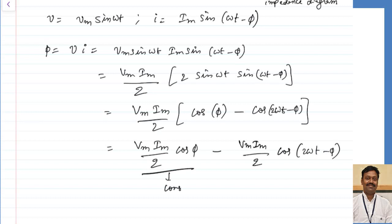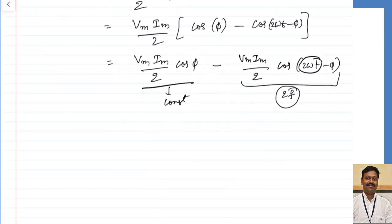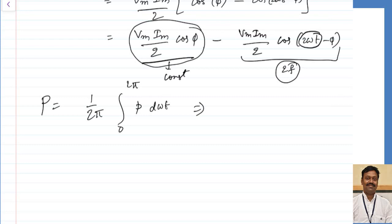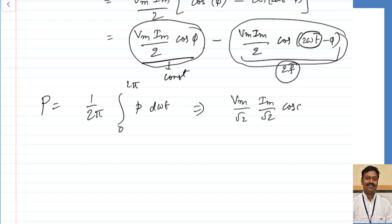The first term is a constant, independent of frequency. The second term oscillates at double the frequency. To calculate average power, we average over one cycle: (1/2π)∫₀²π p·d(ωt). The constant term remains as is, while the double-frequency cosine term averages to zero over 2π. So only the first term remains, giving average power P = (Vmax/√2)·(Imax/√2)·cos(φ) = V·I·cos(φ).